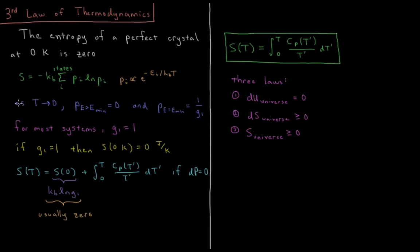As the temperature goes to 0, the probability for all states where the energy is above the minimum energy or the ground state energy, all of those probabilities go to 0.